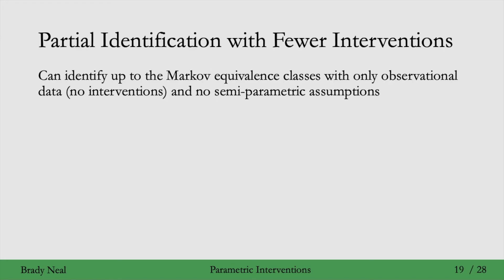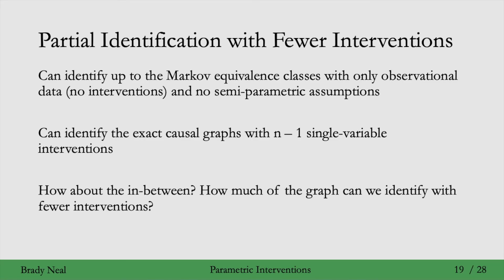We know that we can identify up to the Markov equivalence class if we only have observational data, no interventions, and we're not making any semi-parametric assumptions. We learned this last week. On the previous slide, we saw that we can identify the exact causal graph - just a single graph - with n-1 single variable interventions. But how about the in-between? How much of the graph can we identify with fewer interventions? With observational data, we can identify the skeleton and orient edges involved in immoralities.